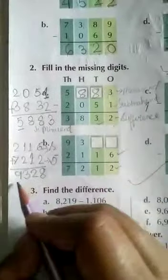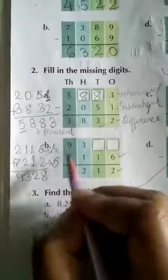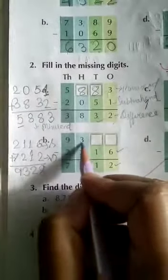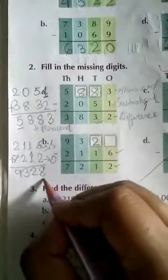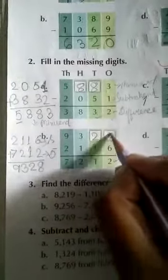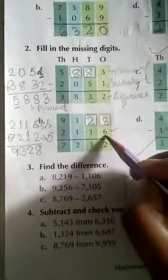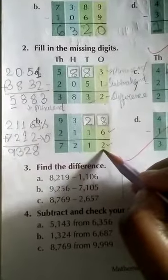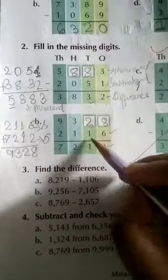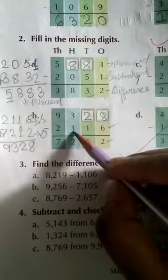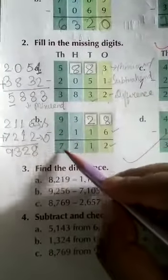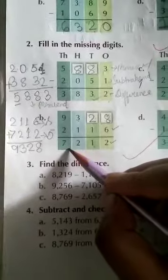This is what? This is subtrahend and this is difference. Now you see the number 9 is already given, 3 already given. So this 2 we will write in 100th place, and this 8 we are going to write in 1s place. Now you do the subtraction. 8 minus 6, 8 minus 6 is how much? It is 2. 2 minus 1, 1. 3 minus 1, 2. And 9 minus 2, 7.